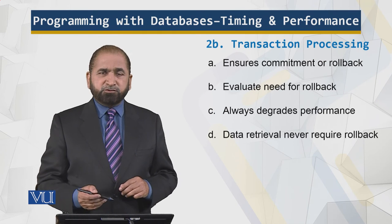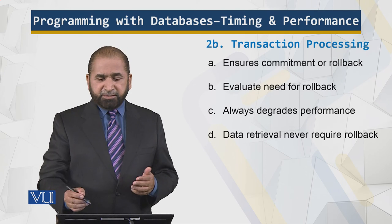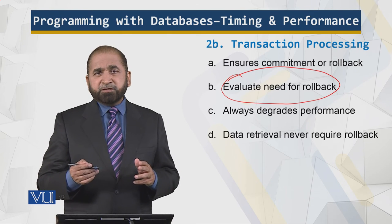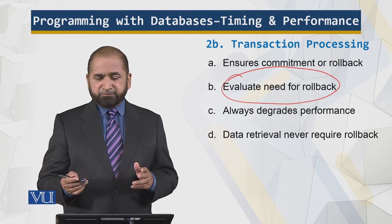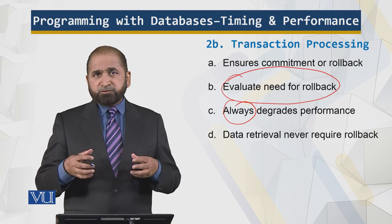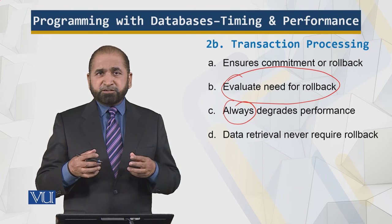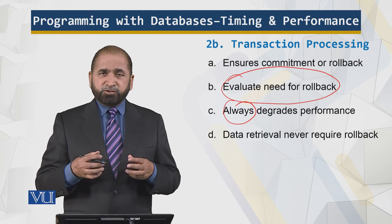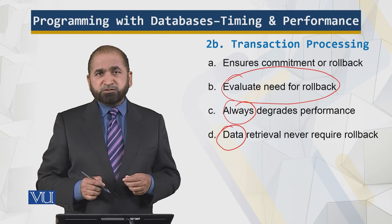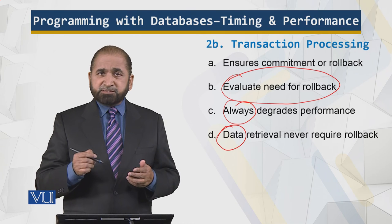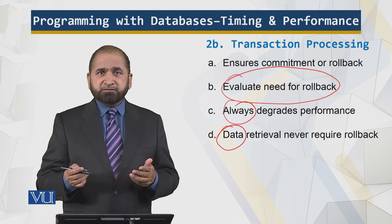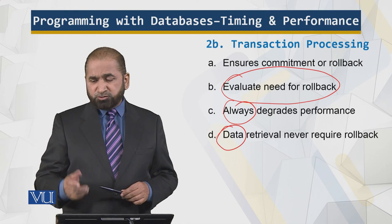Transaction processing ensures commitment or rollback — commitment if successful, rollback if it fails. Evaluate the need for rollback; if rollback is not required, you don't have to implement it. Why code something which is not going to happen? Rollback will always degrade performance. You are going to retain happy customers if your application runs fast — the smart way, not the expensive way. Remember, data retrieval never requires rollback. Rollback is required when you modify, insert, or delete data, but not when you are reading.